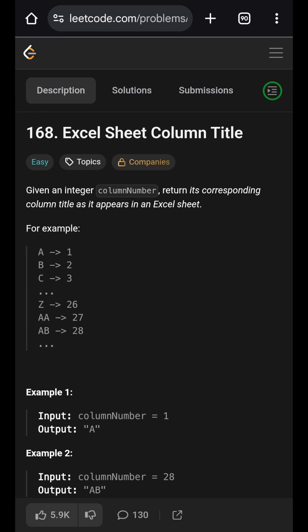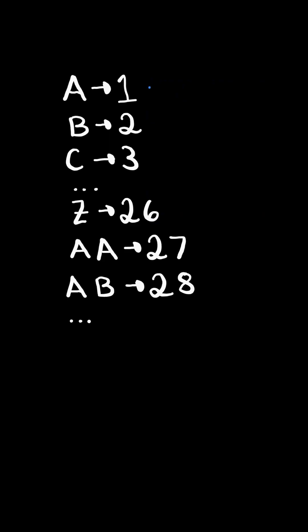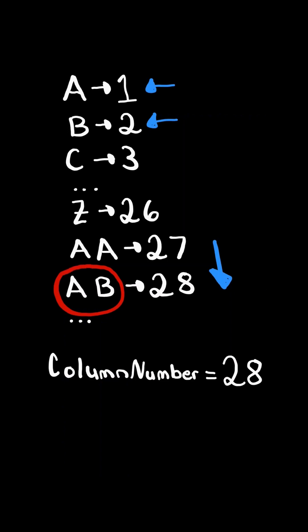Excel sheet column title. Consider the following Excel sheet where A is the first column, B is the second column, and so on. Notice once we pass Z, the column pattern changes to two characters. Given a column number, return its corresponding title as it appears in the Excel sheet.